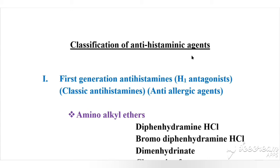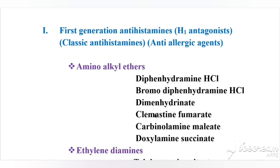The classification of antihistaminic agents begins with first-generation antihistamines, otherwise called H1 antagonists, classic antihistamines, or anti-allergic agents. Whenever the term 'antihistamines' is used, it indicates this group. There are nine subtypes. The first subtype is amino alkyl ethers, with examples including diphenhydramine hydrochloride, bromodiphenhydramine hydrochloride, dimenhydrinate, and clemastine fumarate.